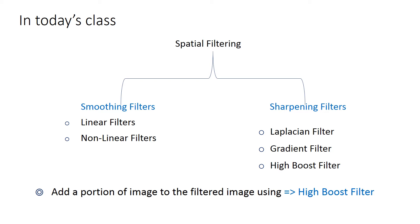Smoothing filters are basically low-pass filters where I do an averaging operation over the image using the coefficients of my filter. It could be a weighted average or a normal average, and that operation basically blurs the edge information. So where I have high frequency information or sudden change in intensity value, that gets degraded.